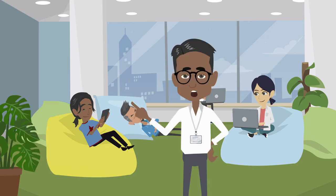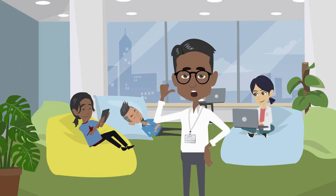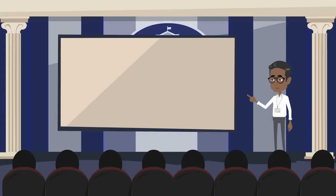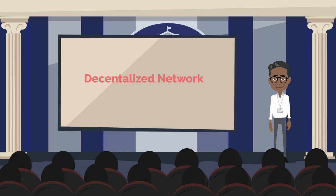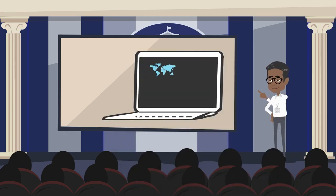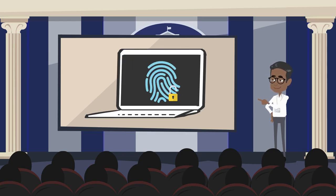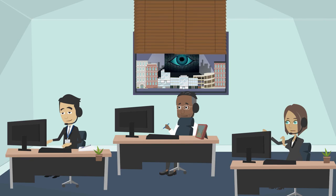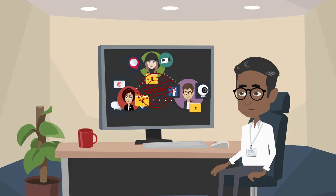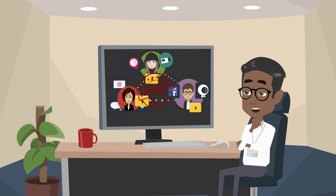Every problem has a solution, and this problem also has one. The solution is the decentralized network. On a decentralized network, you can use various features and it is absolutely secure and privacy-based. No company or government can intercept for any purpose. Your data is not stored anywhere — it will be stored on your own system or on the system with which you communicate.